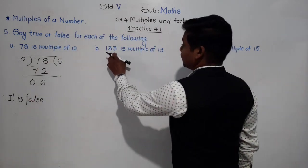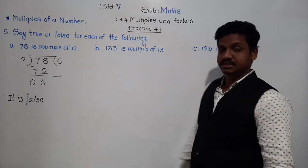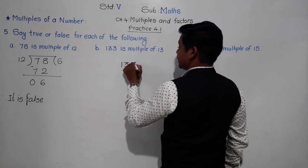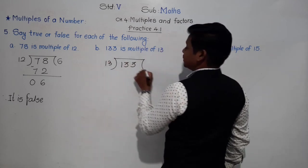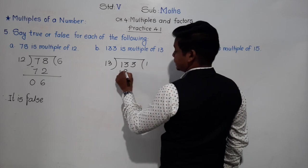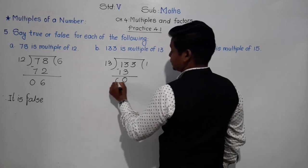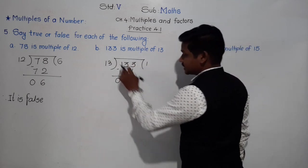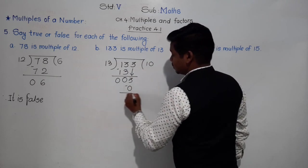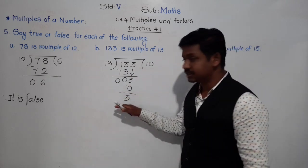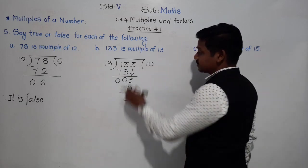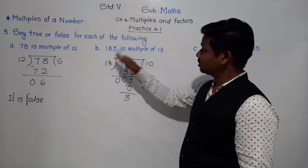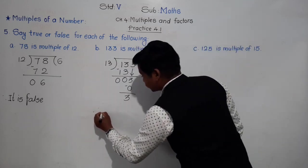Second statement: 133 is a multiple of 13. We divide 133 by 13. 13×10=130. Bringing down: the remainder is 3. Since 133 is not exactly divisible by 13, it is not a multiple of 13. The statement is false.